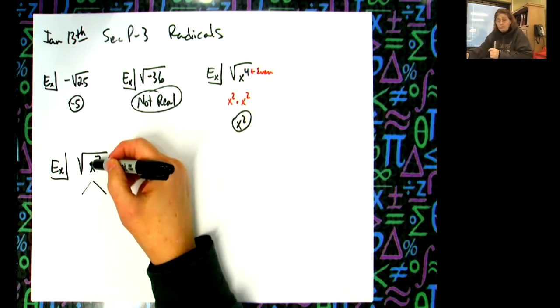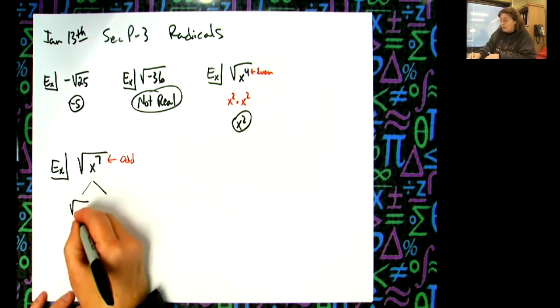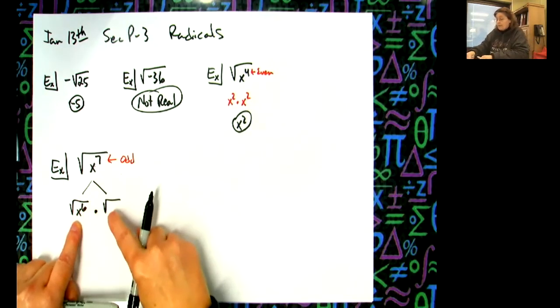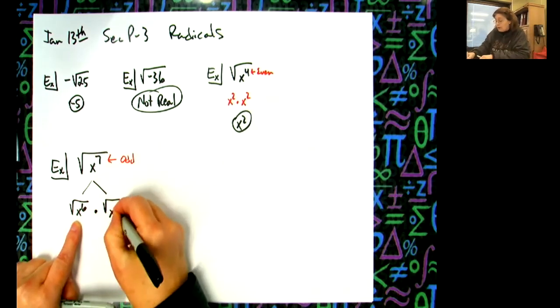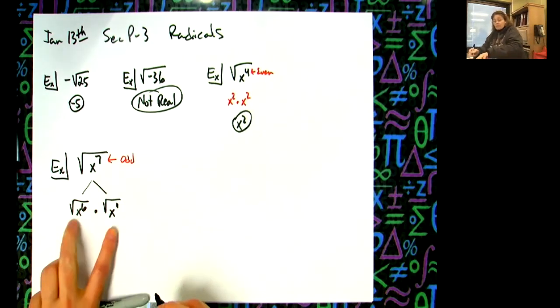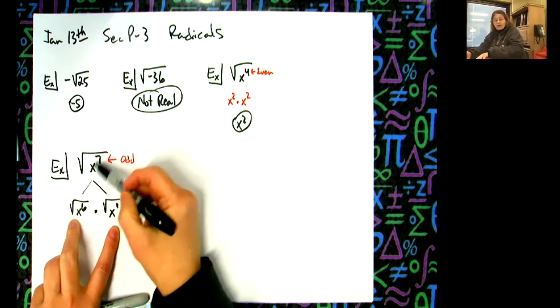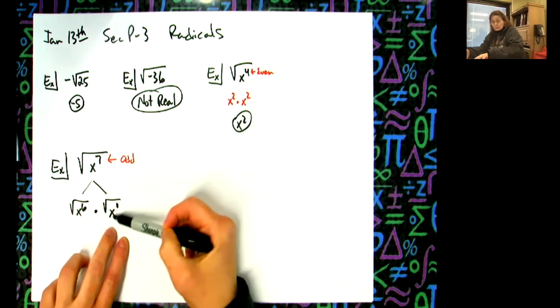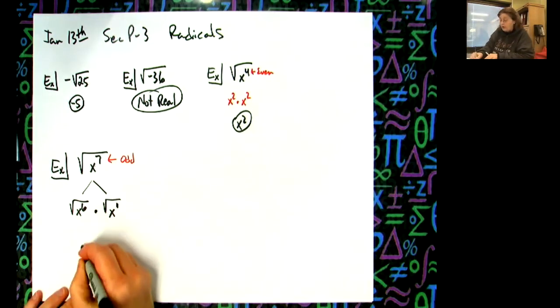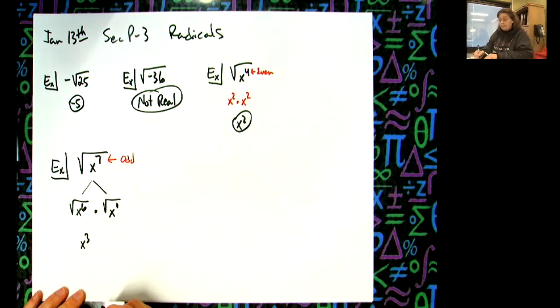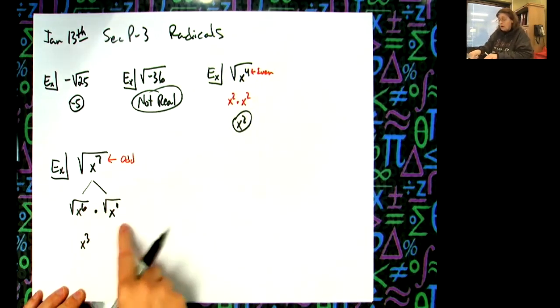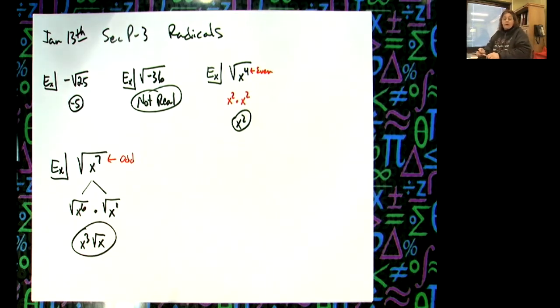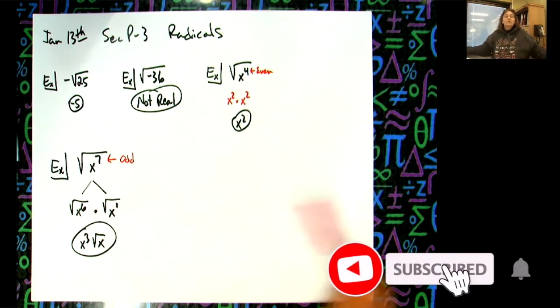x to the sixth is a perfect square root. So I want to break this up into an x to the sixth times what will give me the x to the seventh? Well, it would have to be an x to the first power. So basically every time if I've got an odd exponent like this, when I break it up, it's always going to be one less even exponent, and this will be a plain x, which means then this right here is an x to the third. You take half the exponent and then square root of x is just square root of x. So it does simplify, and we can take square root of an x to the seventh.